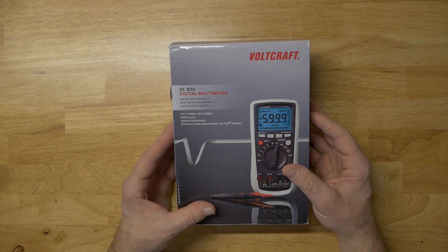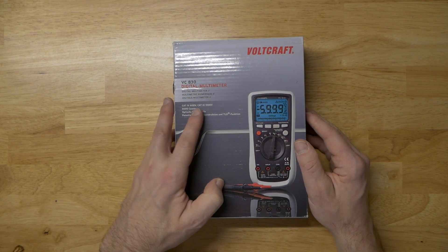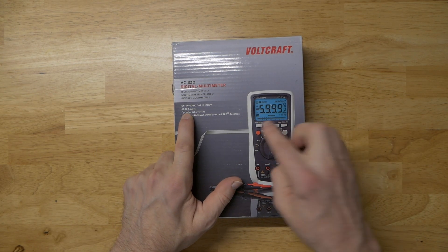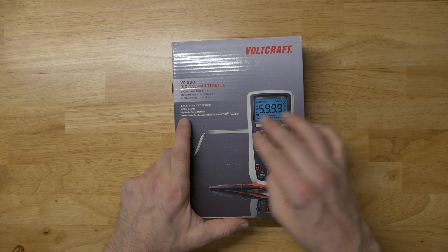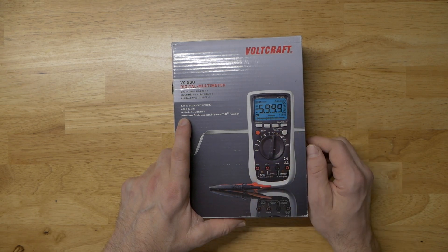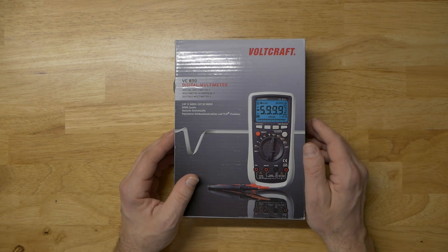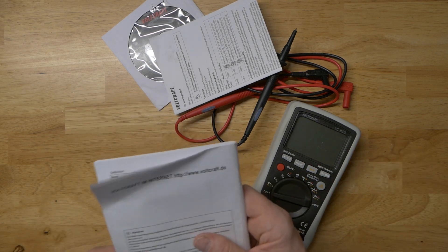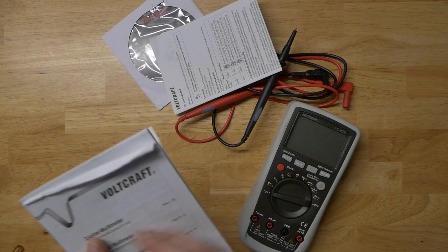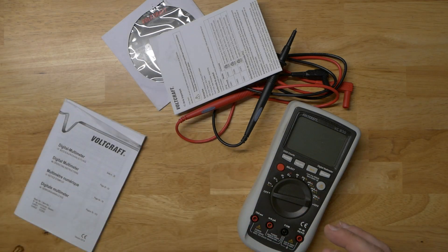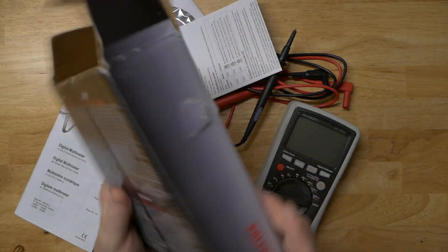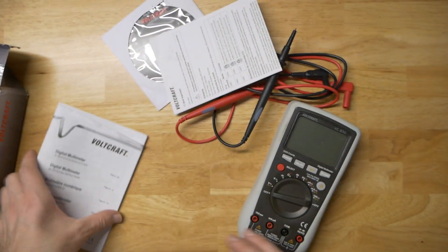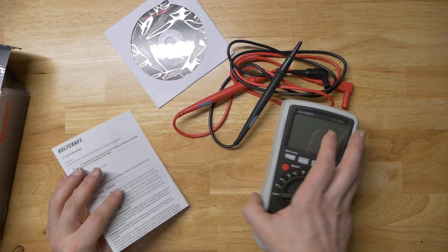This is the VC830 Voltcraft, Cat5, 600 volt, 1,000 volt. I'll never really use that. 6,000 count accuracy, which is just the decimal place and accuracy that you get. So it's a little more accurate than the previous meter that I had anyways, which is nice. But I'm going to bust this thing open. I'll show you some features of it. So Voltcraft is a German brand. The parent company is Conrad Electronics. It's been a German company for a long time. They've done a lot of multimeters over the years.